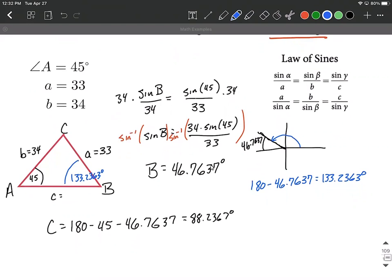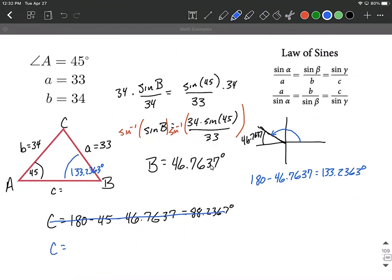All right, next up, instead of using this value for C, we're going to do a very similar calculation but with the obtuse angle. So 180 minus the 45 that was given to us at the beginning minus that 133.2363 degrees is going to turn out being only 1.7637 degrees as I kind of label it in my triangle.